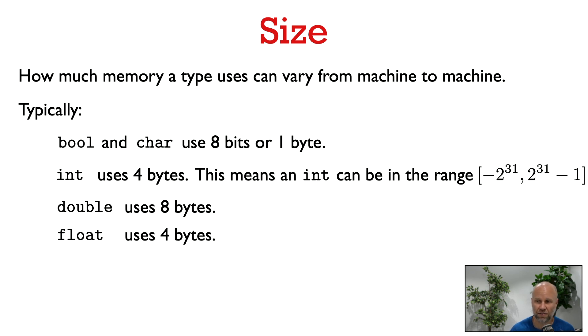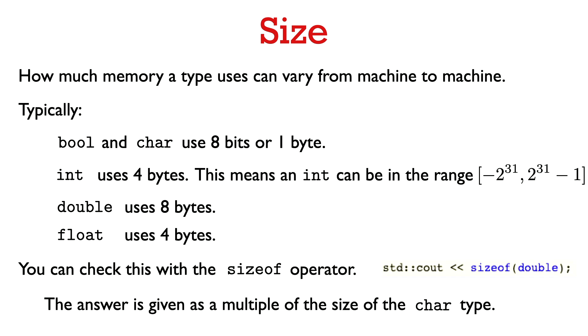You can check the values on your machine with a function called the sizeof function. For example, you can just type cout the size of a double, and that will print out a number. And that number is how much memory a double uses on your machine, phrased as a multiple of how much memory a char uses. Typically a char will use 1 byte, and a double will use 8 bytes. On my machine, this prints out 8, so you can check if it's the same on your machine.